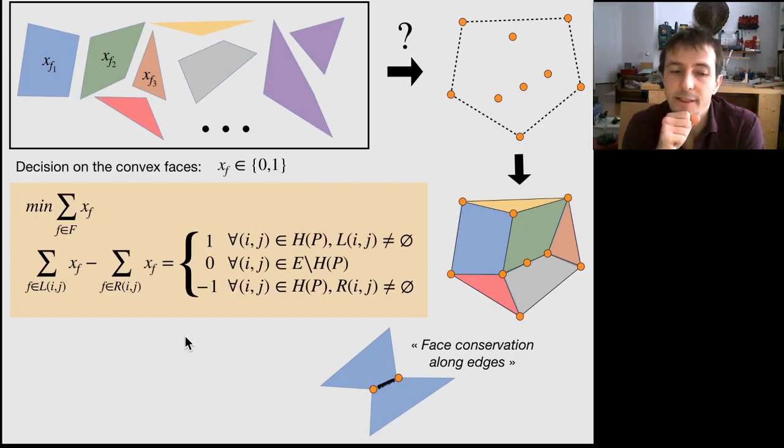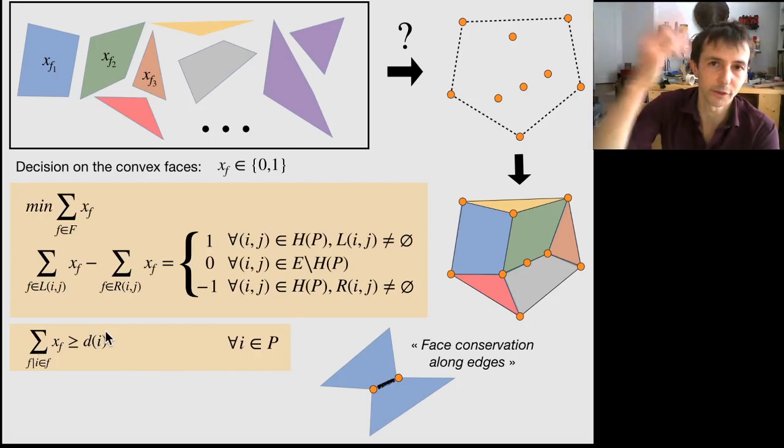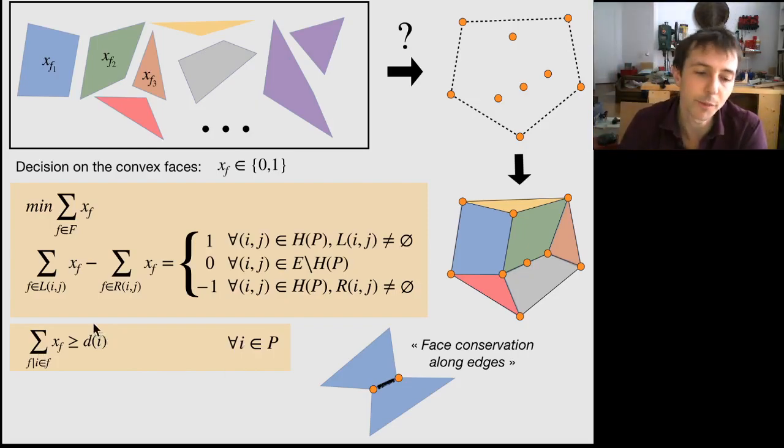Even though it is valid, it's actually important to add the following constraints. For any vertex i, we use the lower bound on the degree to enforce the minimum number of faces that are connected to i, which must be at least d(i) that I already mentioned before. And this is important because it helps the linear relaxation, actually.